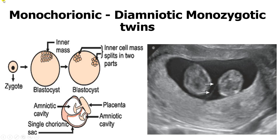You could have what we call a monochorionic diamniotic form of monozygotic twinning, where the split occurs during the blastocyst stage — usually beyond day four of fertilization, so between day five and day seven. What usually happens is the inner cell mass of the blastocyst is what splits, so the placenta does not split. Each twin develops with their own amniotic cavity, making it monochorionic — shared placenta — and diamniotic — each with its own amniotic sac.